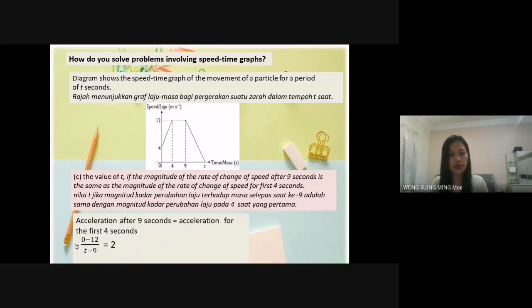So negative, minus speed 0 minus 12, over time T minus 9, equal to negative 2. Negative negative positive. So, 12 over T minus 9 equal to 2.